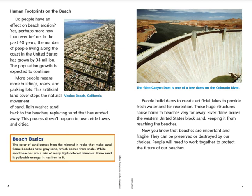Beach Basics: The color of sand comes from the minerals in rocks that make sand. Some beaches have gray sand, which comes from shale. White sand beaches are a mix of many light-colored minerals. Some sand is yellowish-orange because it has iron in it. The Glen Canyon Dam is one of a few dams on the Colorado River. People build dams to create artificial lakes to provide fresh water and for recreation. These huge structures cause harm to beaches very far away. River dams across the western United States block sand, keeping it from reaching the beaches. Now you know that beaches are important and fragile. They can be preserved or destroyed by our choices. People will need to work together to protect the future of our beaches.